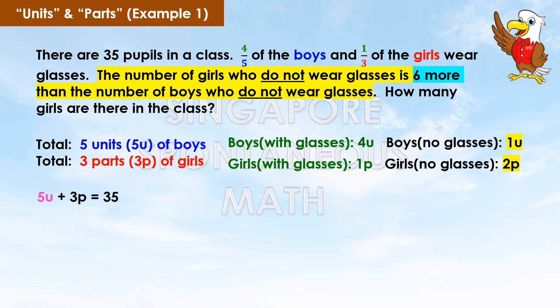Five units plus three parts equals thirty-five. The number of girls without glasses is six more than the number of boys without glasses. Girls without glasses is two p; boys without glasses is one u. Therefore, two p equals one u plus six.